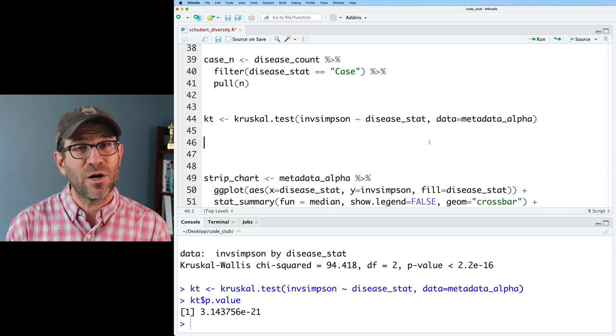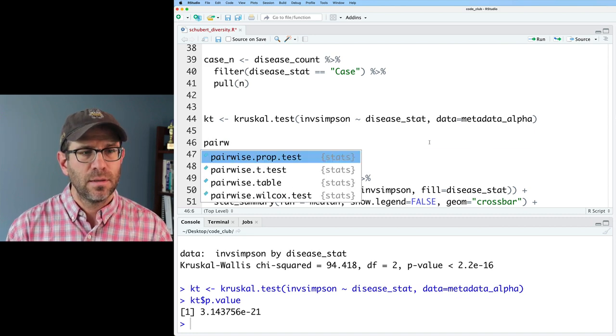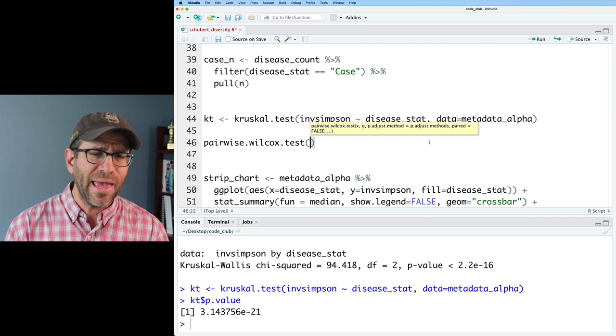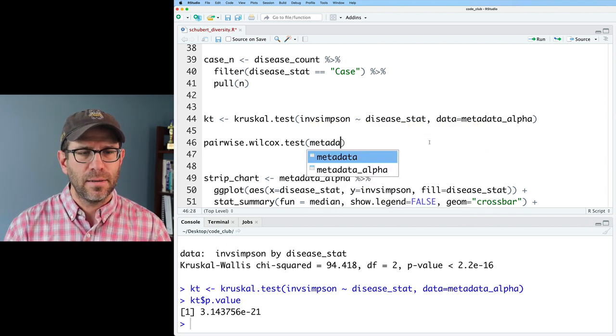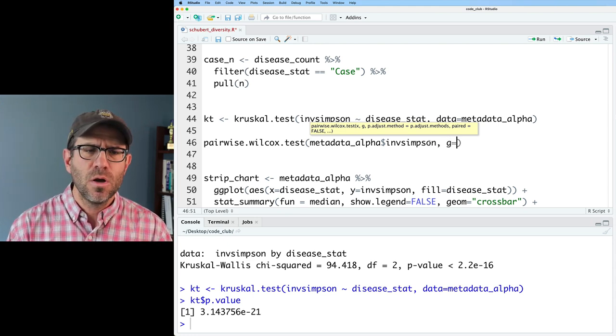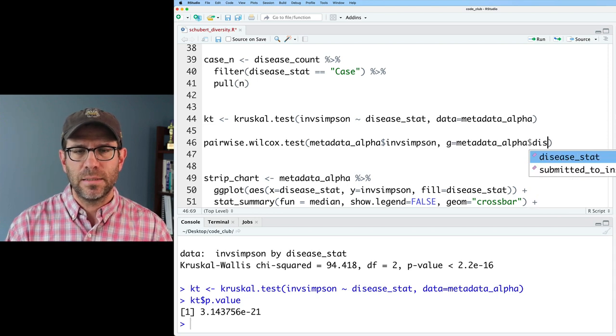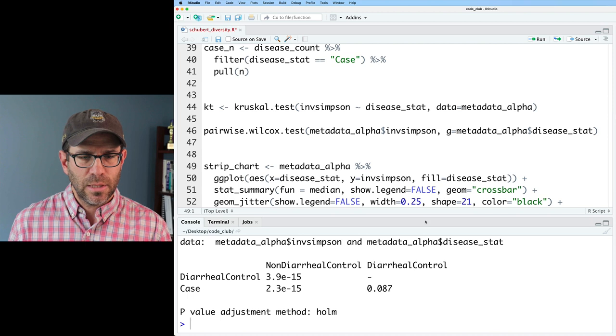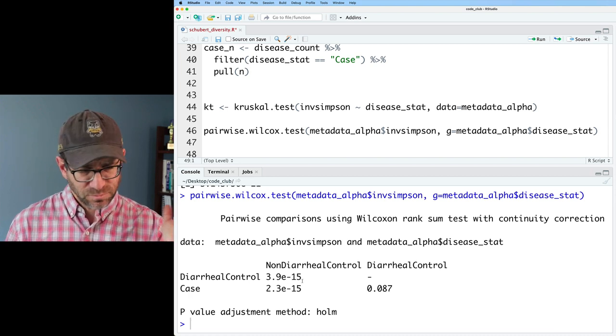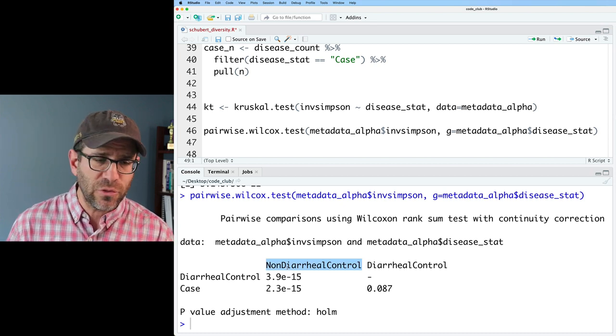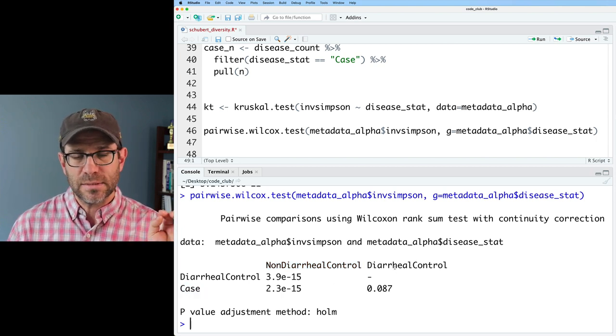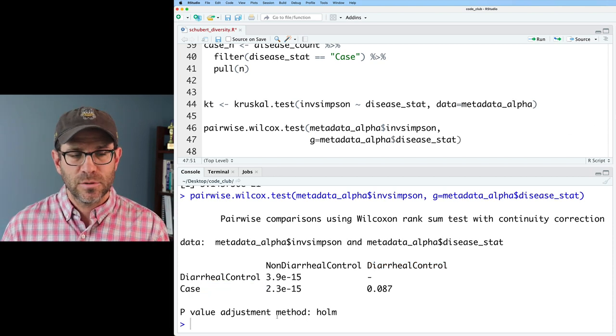The next question then is which of the groups are different from the others? To get at that, we can do pairwise.wilcox.test. This notation, the arguments that you give it, is going to be different than the Kruskal test, which is really annoying. So what we will do then will be to do metadata_alpha dollar sign invsimpson, and then we need a g variable or a grouping variable, which will again be metadata_alpha dollar sign disease_stat. Looking at the output, it tells us the comparison that it made, and then it gives us the pairwise comparisons. We see that the non-diarrheal control, which is what we call healthy, is significantly different from people with diarrhea and the people with the case who are diarrhea plus C. difficile. Whereas the comparison between diarrheal control and case is not significant.